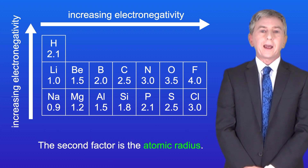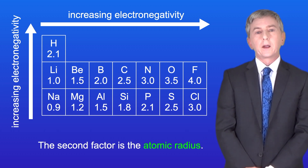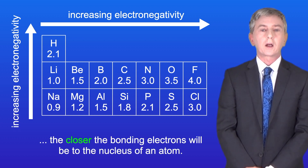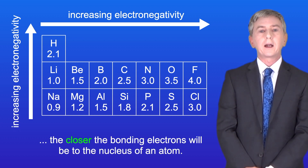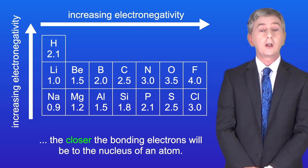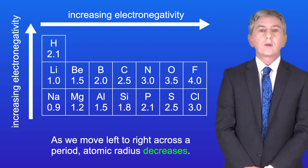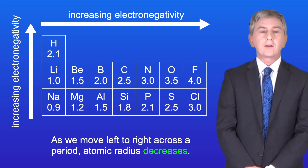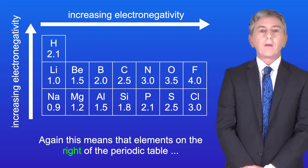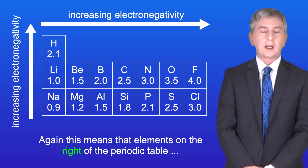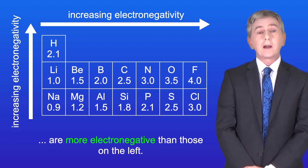The second factor is the atomic radius. The smaller the atomic radius, the closer the bonding electrons will be to the nucleus of an atom. As we move left to right across a period, atomic radius decreases, and again this means that elements on the right of the periodic table are more electronegative than those on the left.